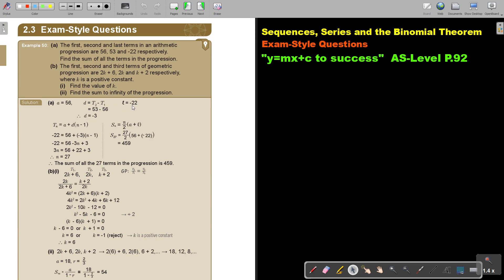Now I have to find that position of the last term. So I use the tn formula to find that position. So in the place of tn I put the negative 22 and then I put a and I put d and I put n minus 1.